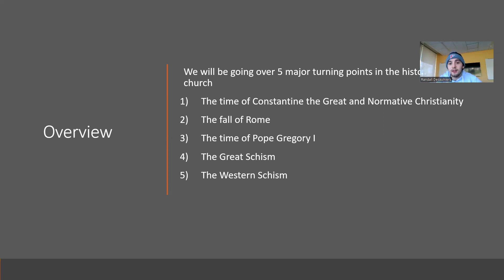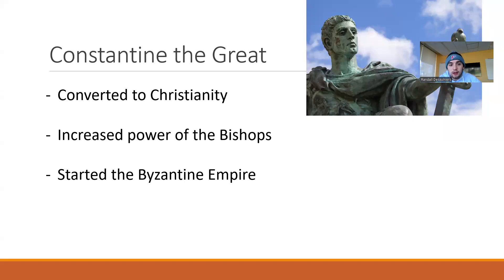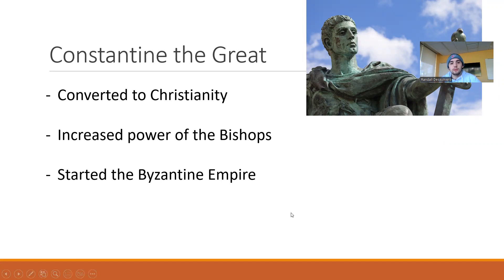First, we're going to be tackling the time of Constantine the Great and normative Christianity, the fall of Rome, the time of Pope Gregory I, the Great Schism, and then the Western Schism. Starting off, Constantine the Great established normative Christianity and increased the power of the bishops. He also started the Byzantine Empire, where the ancient Greek colony of Byzantium was, in 330 AD.